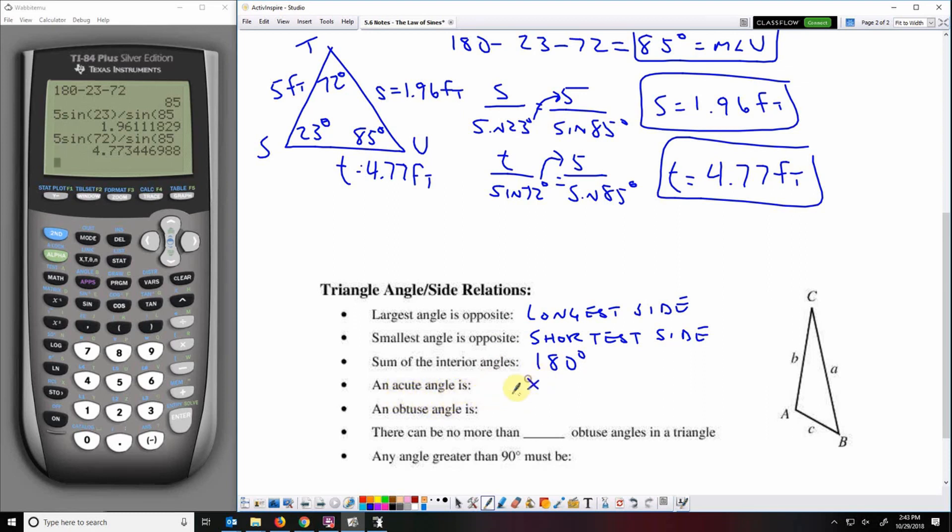An acute angle should always end up being bigger than zero degrees, but smaller than 90 degrees. An obtuse angle should always be bigger than 90 degrees, but smaller than 180 degrees. You can't have more than one obtuse angle in a triangle. One obtuse angle should always be the largest angle in your triangle.